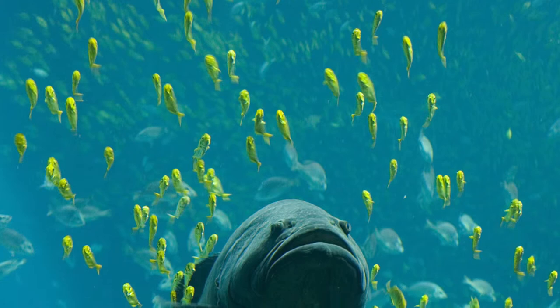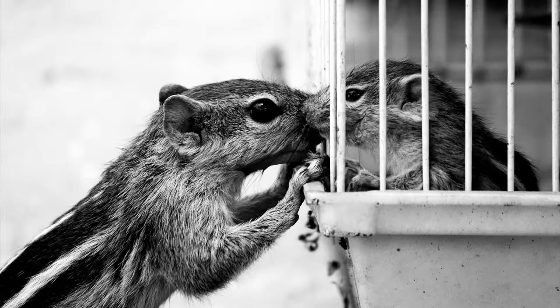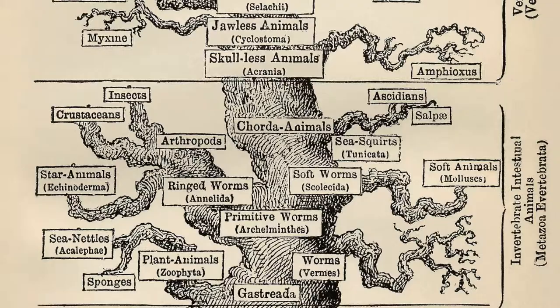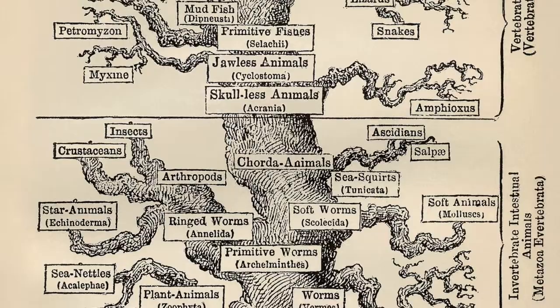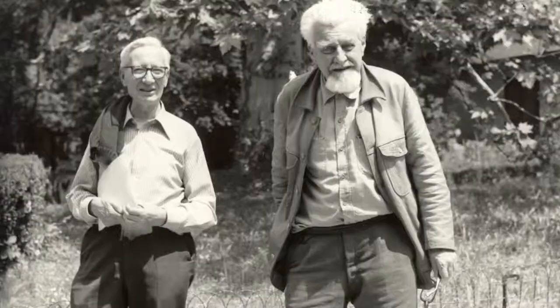Tinbergen's four whys come down to: mechanisms — how does it work; development — the lifespan and history of the individual animal; function — what is it good for; and evolution — what is the course of the total history of the species and all life on Earth in relation to the particular behaviour.